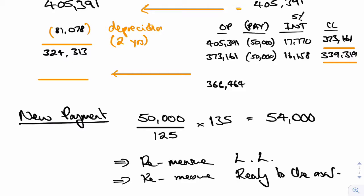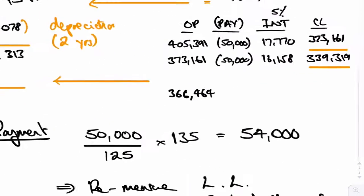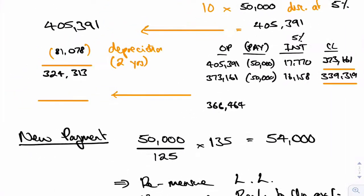But we were at 339, weren't we? It's now at 366, so re-measuring the liability means we had to add on an extra 27,145 to the liability.